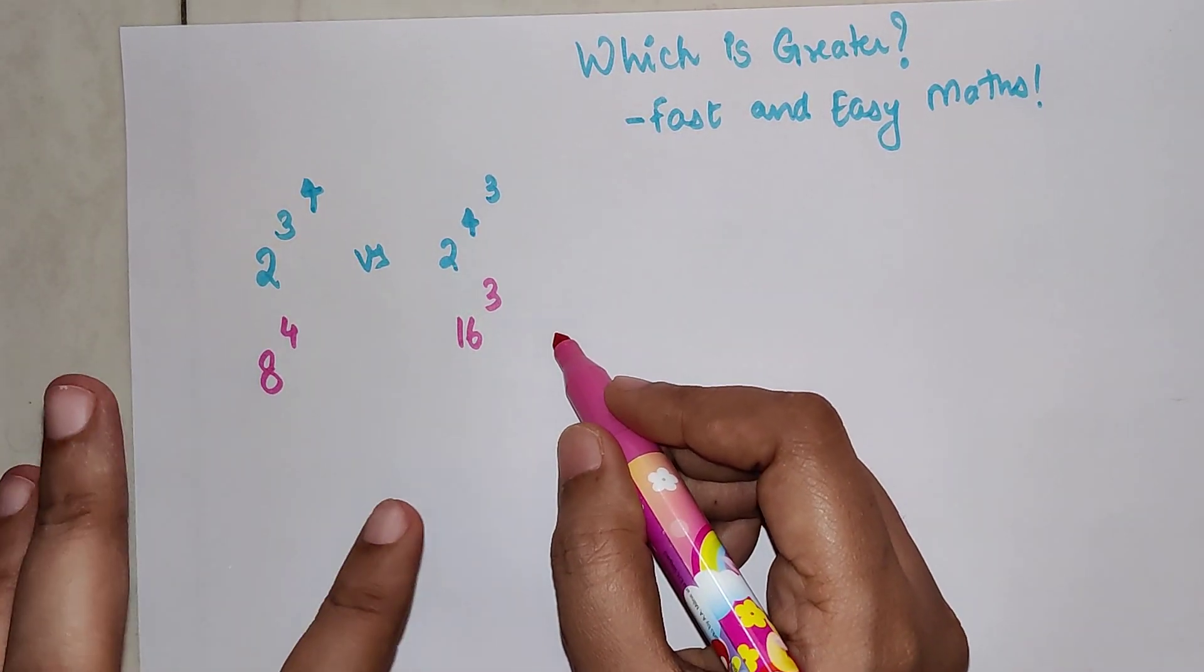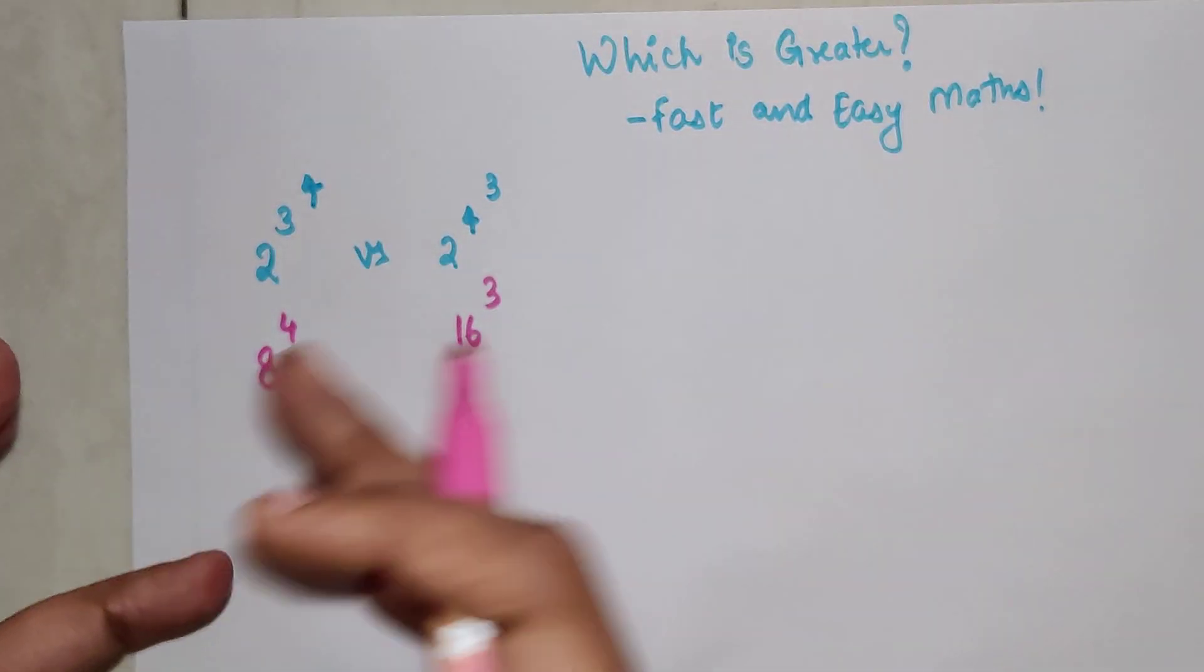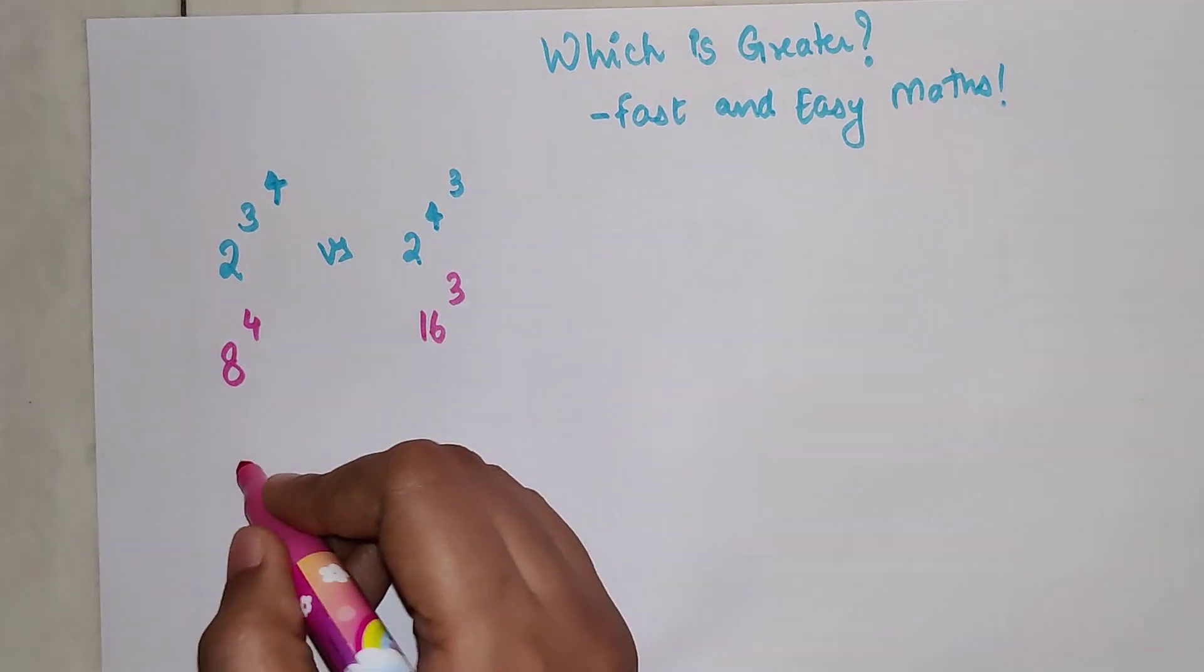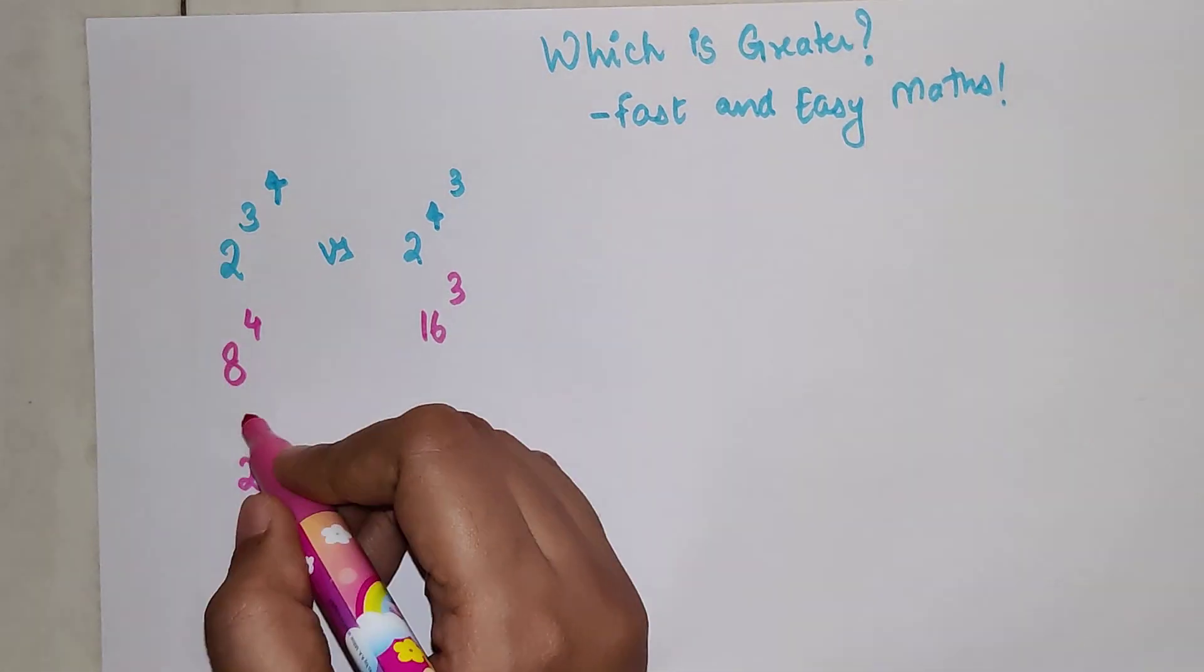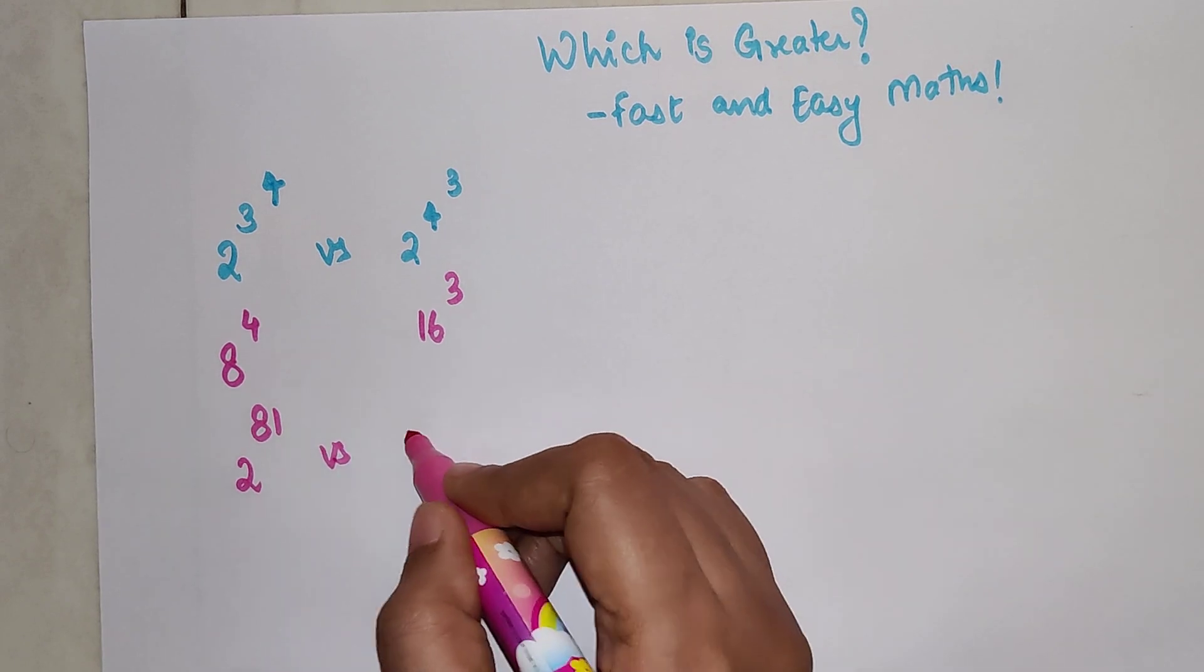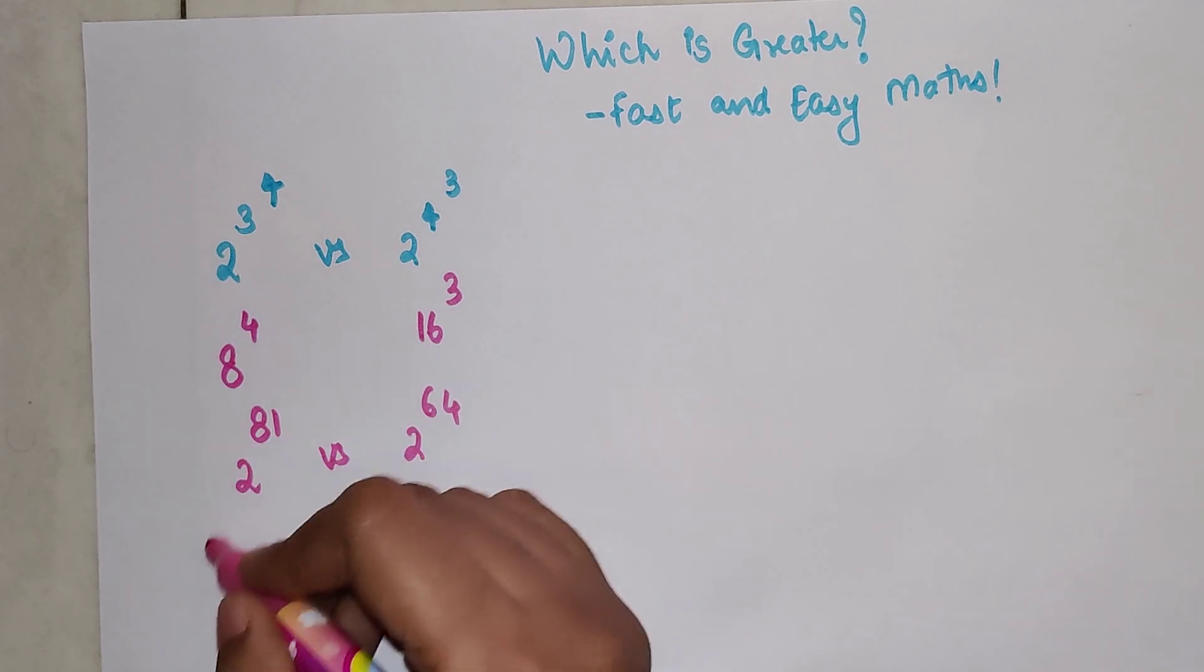Instead, if this kind of question happens in any entrance exam where you have less than a minute to solve, what you have to do is keep 2 as it is, and this becomes 3 raised to 4, which gets you 81, versus 4 cubed which is 64. So out of these two I can say...